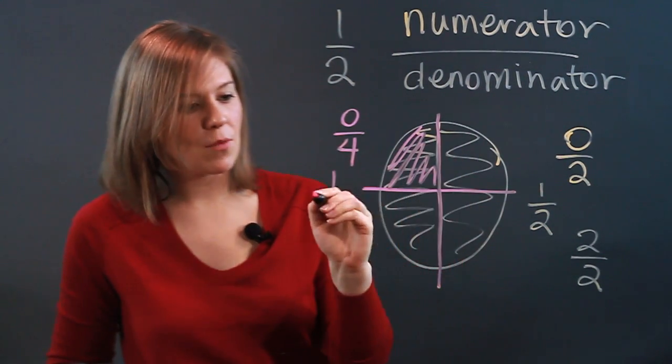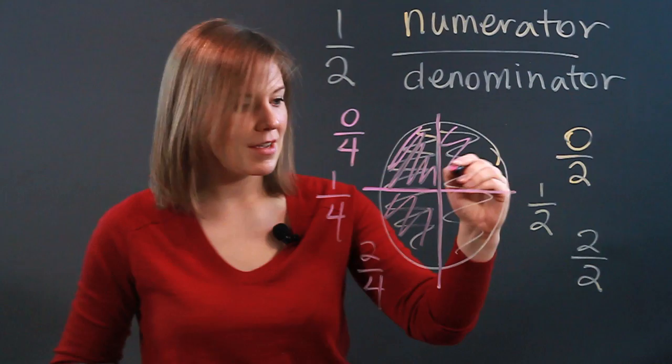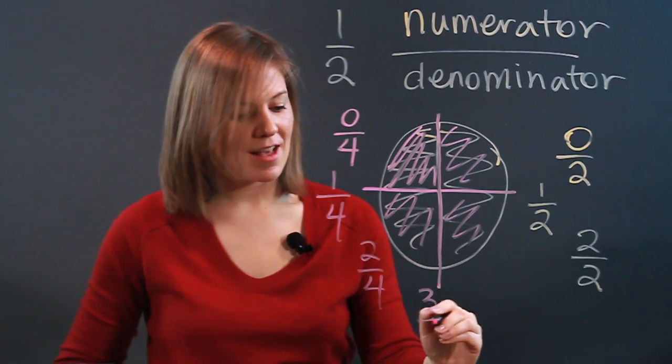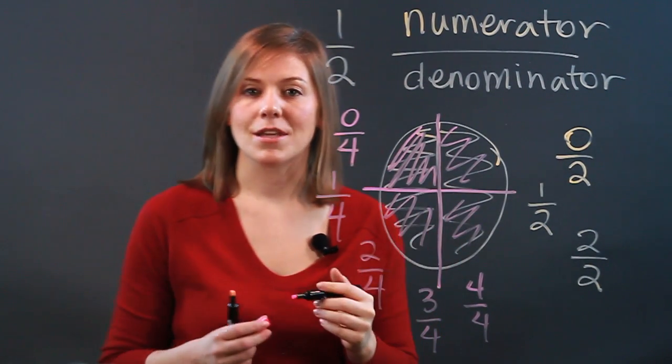If I color one in pink, I have one of the four, two of the four, three of the four, four of the four, right? The four here is showing how many equal parts the whole is split into.